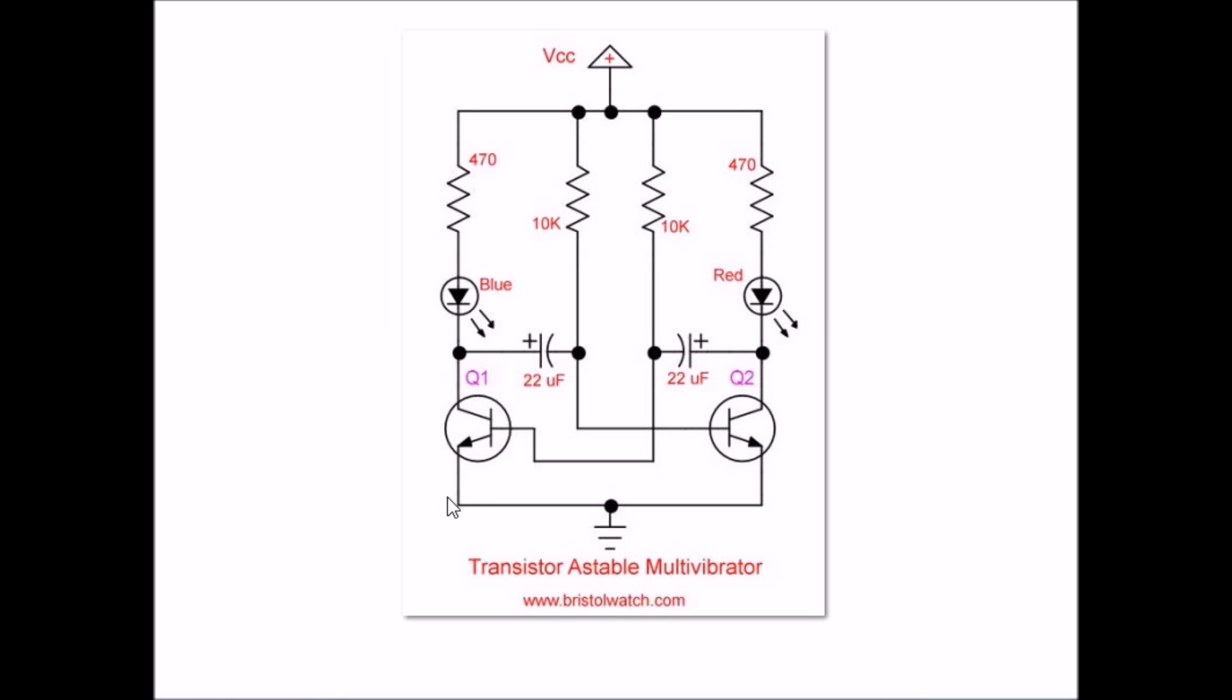When first powered up, one or the other transistor will cut on and the other will be off. This is due to slight differences in the transistors, the caps, and the charging resistors. If one transistor is on, the other is always off.